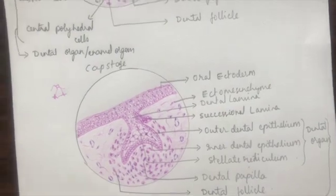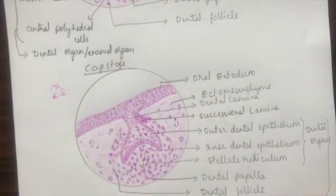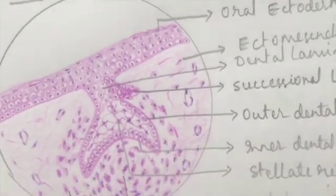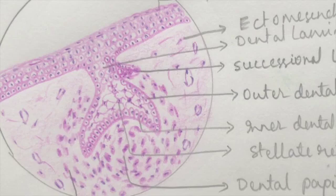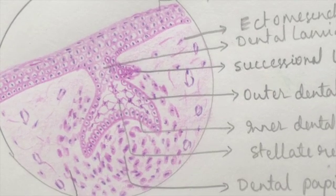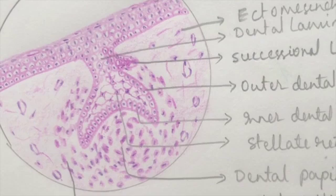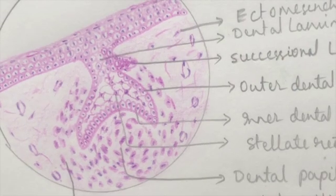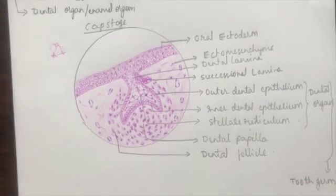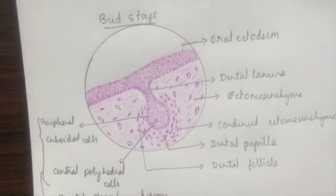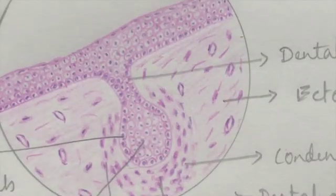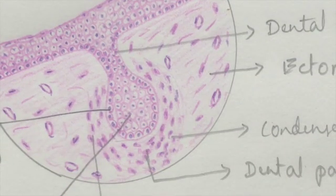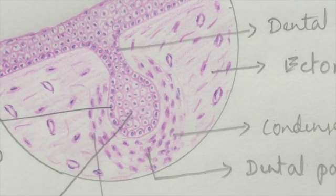This is the drawing of the cap stage — you can have a closer look at these cells: the stellate reticulum in the centre, inner and outer dental epithelial cells, dental papilla, and dental follicle cells of the cap stage. These are the cells of the bud stage; you can take a closer look to better understand how to draw them and how they should look once finished.